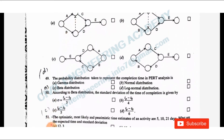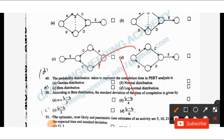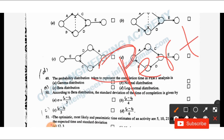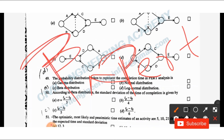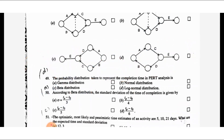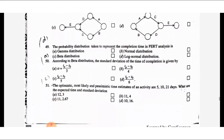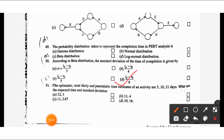Question 49: The probability distribution used to represent completion time in PERT analysis is the beta distribution — option C. Also, according to the beta distribution, the standard deviation of the time of completion is given by: sigma = (Tp minus T0) divided by 6.